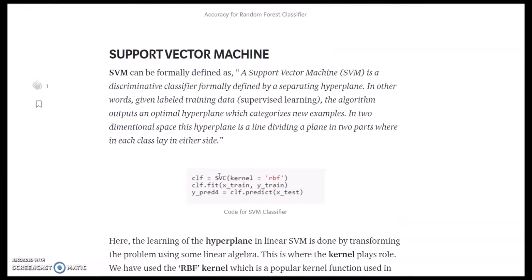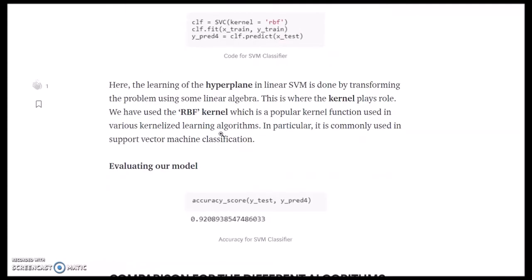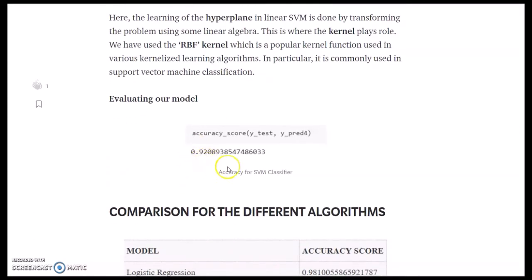Support vector machine. A support vector machine is a discriminative classifier formally defined by a separating hyperplane. Since the data is not linear, we have to use the RBF kernel. Predict 4 is the predicted outcome of support vector machine and the accuracy is 0.92.